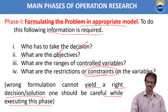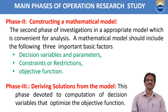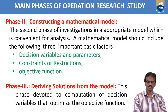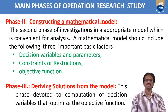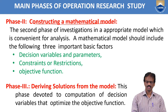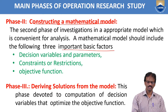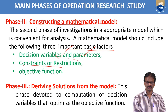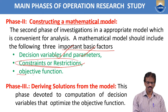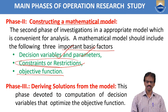Next is phase number two: constructing a mathematical model. In this phase, three basic factors are very important. One is the decision variables and parameters. Next are the constraints or restrictions. Next is the objective function, which may be a maximization or minimization objective function.